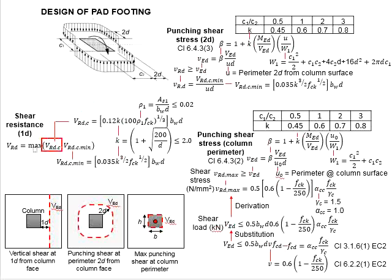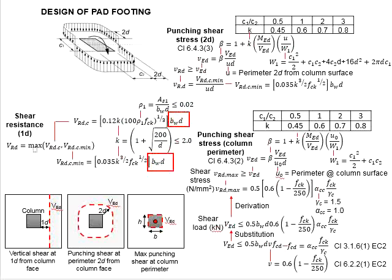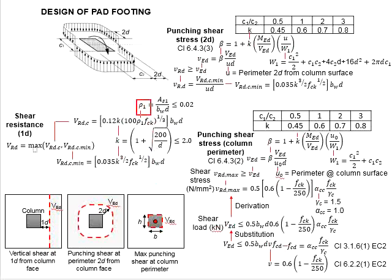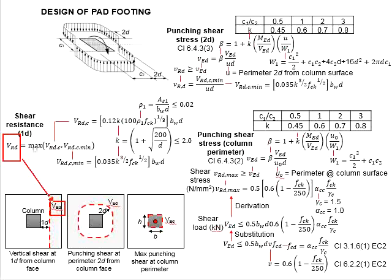Next, we look into the shear resistance of the concrete, which is given by this formula. The k here is the same formula given here, and the BW here is the same BW. There is an additional consideration in terms of the amount of reinforcement bar provided. The AS here is the provided reinforcement bar over the critical shear plane, and this rho1 needs to be less than 0.02. The larger value of the two will be the shear resistance, and your shear resistance needs to be greater than the shear load acting on the member.